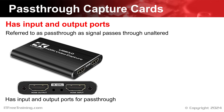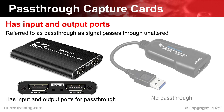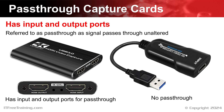The other option is no pass-through. These capture devices only have an input connector. In some cases, this may be all that you need. For example, if you have a video camera that can't be used as a webcam but does have a video out, you can plug the camera's output into a capture device like this and it will convert the signal to USB, allowing you to use the video camera as a webcam.